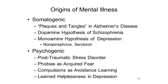Somatogenic theories hold that mental illness is due to biological causes, such as brain insult, injury, disease, something genetic, something hormonal. Psychogenic theories, by contrast, hold that mental illness is due to environmental causes, something about experience and learning.